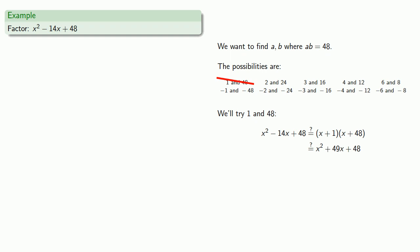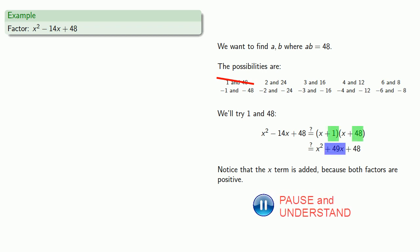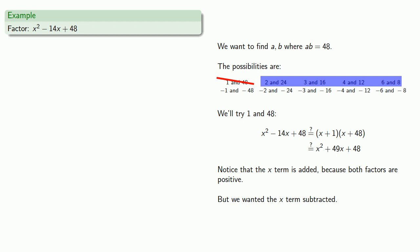Let's see why this didn't work. The first thing to notice is that the x term is added, plus 49x, because both factors, plus 1 and plus 48, are positive. But we wanted the x term subtracted. We wanted to get minus 14x. If we try any of the other positive factors, 2 and 24, 3 and 16, and so on, we're still going to get a plus some number of x. So we'll focus on the negative factors and ignore all of these positive factorizations.